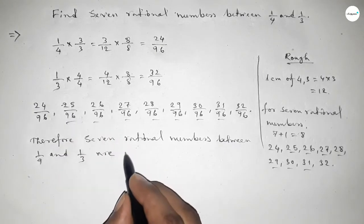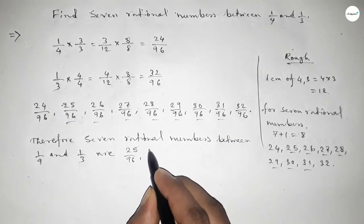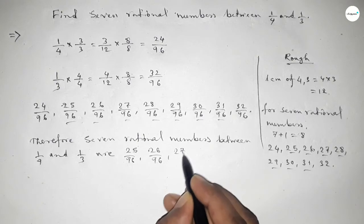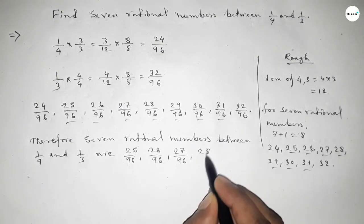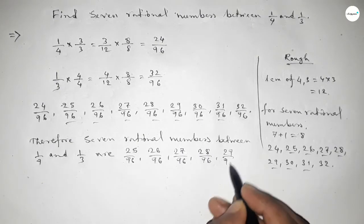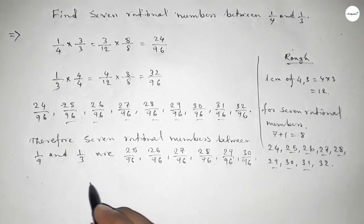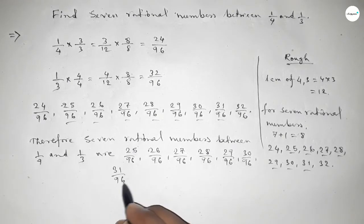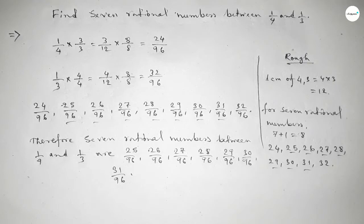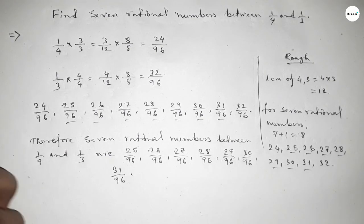26 over 96, 27 over 96, 28 over 96, up to the last one, 31 over 96. So this is the process to find out 7 rational numbers between 1 over 4 and 1 over 3. That's all. Thanks for watching. Please subscribe and like.